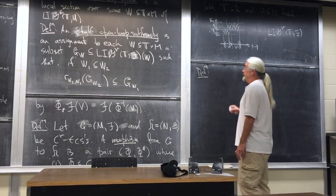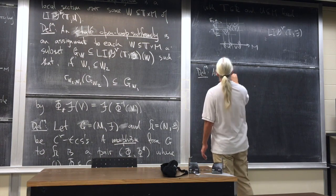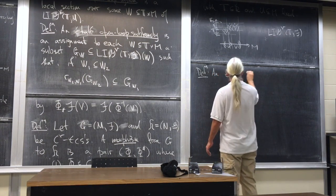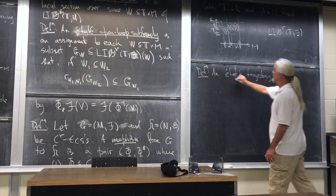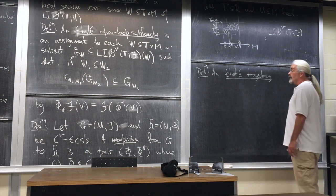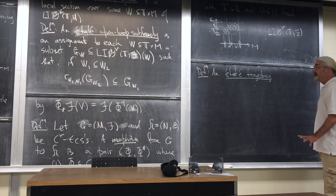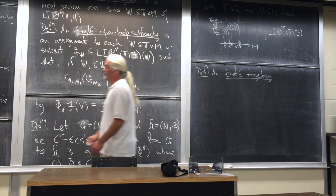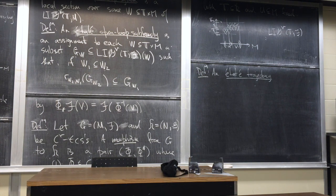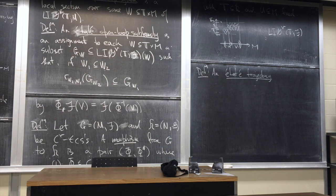Now we can define what a trajectory means in this setting — an étale trajectory. Since these sections take values in the étale space rather than giving tangent vectors directly, at each point (T, X) in W you get a germ, and you can evaluate that germ at X to get a tangent vector. So a locally absolutely continuous curve c from some sub-interval T-prime into M is an étale trajectory if there exists a local section X over a neighborhood in W such that c'(t) equals the evaluation-at-c(t) of X(t, c(t)).